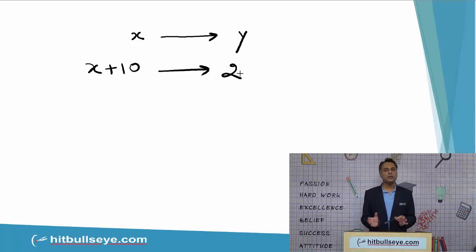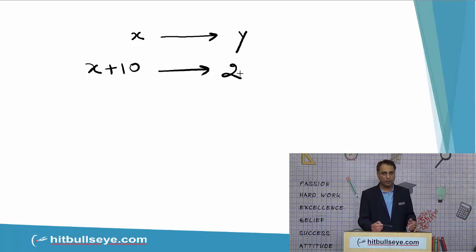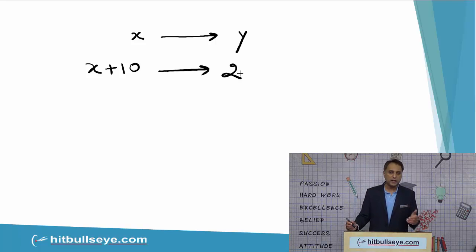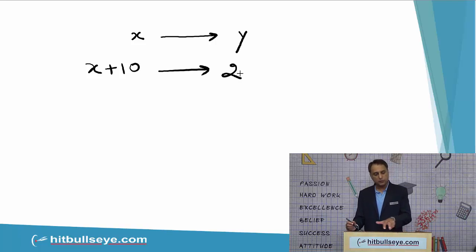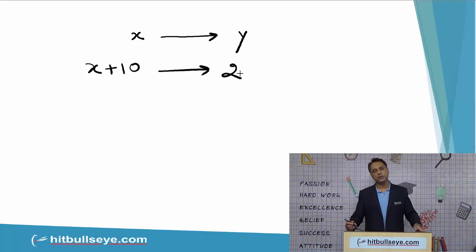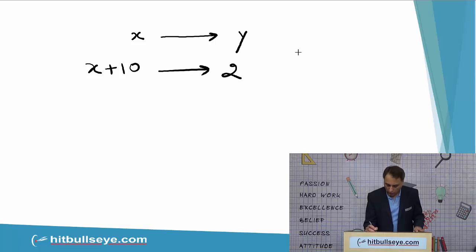Looking at the equation more carefully: x flowers for y rupees, x plus 10 flowers for 2 rupees, and x and y are integers. You can conclude that the value of y is 1, because y is an integer and since x plus 10 flowers cost 2 rupees while x flowers cost y rupees, y must be an integer less than 2. Therefore the only option is 1.